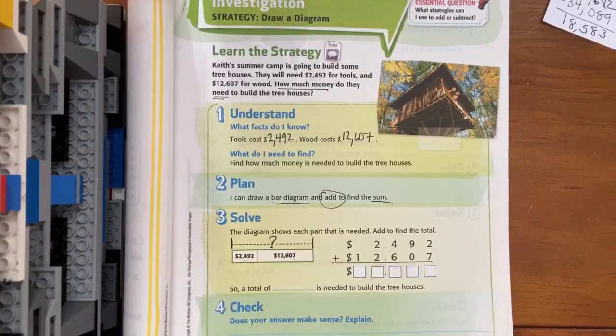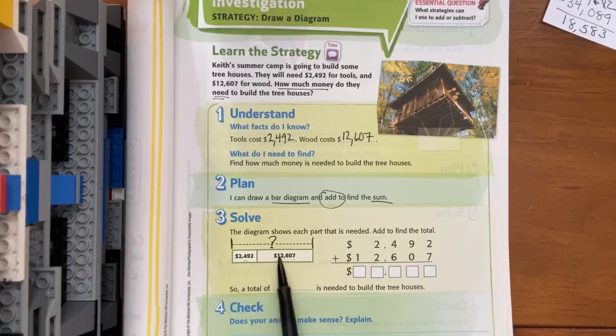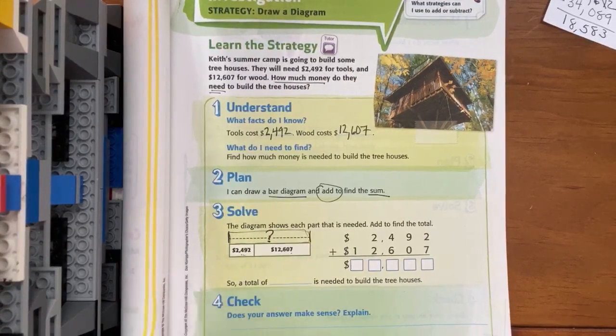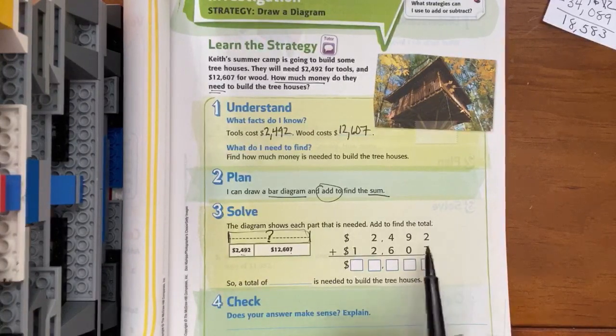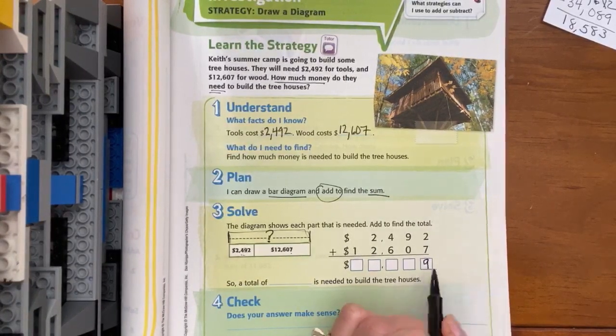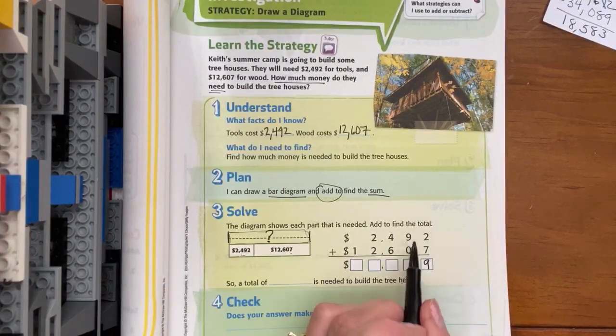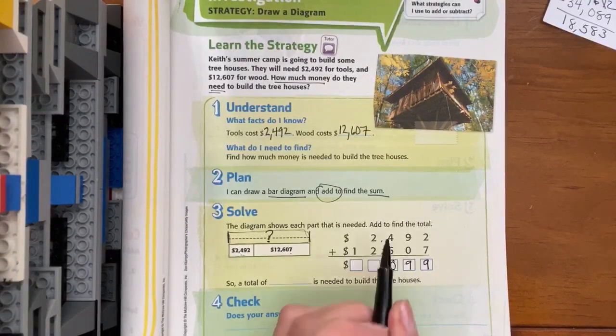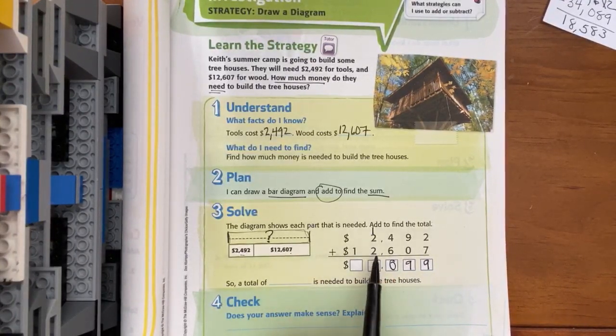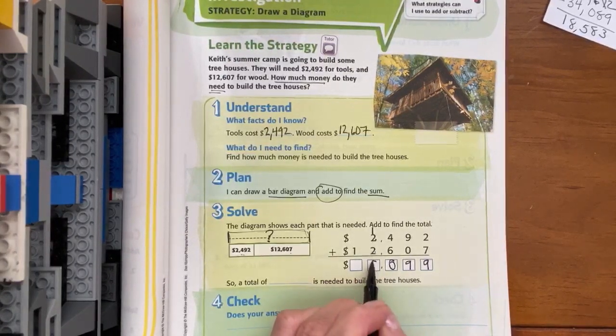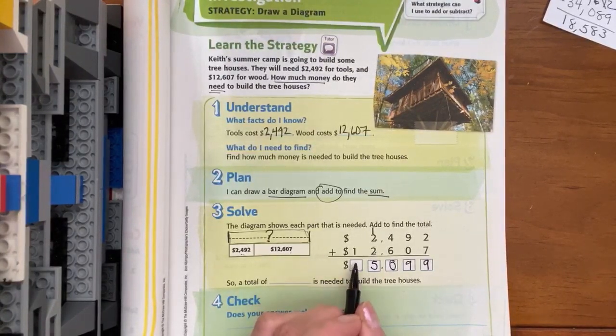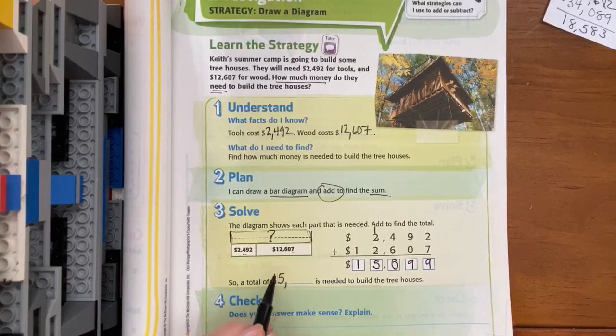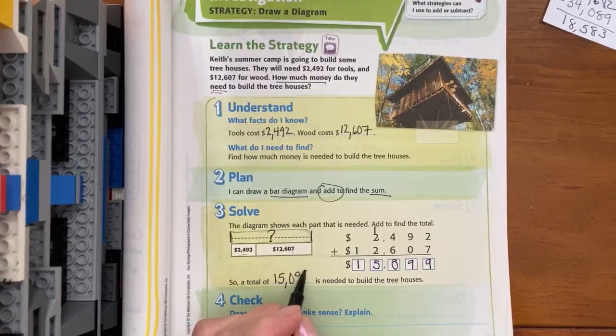By looking at this, we know we're going to have to put these two together to figure out what this whole bar would be. Let's add. We start in the ones column. 7 plus 2 is 9, and we move left to greater place value as we go. 9 plus 0 is 9, 6 plus 4 is 10. I regroup my group of a thousand. 2 plus 2 is 4, plus 1 more is 5 groups of a thousand and 1 group of ten thousand. So a total of $15,099 is needed to build the tree houses.